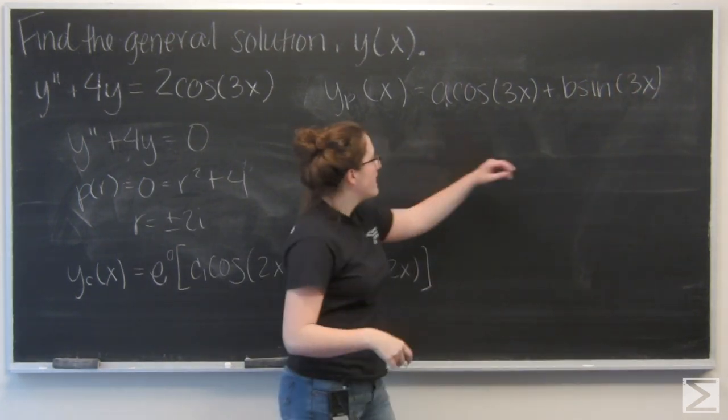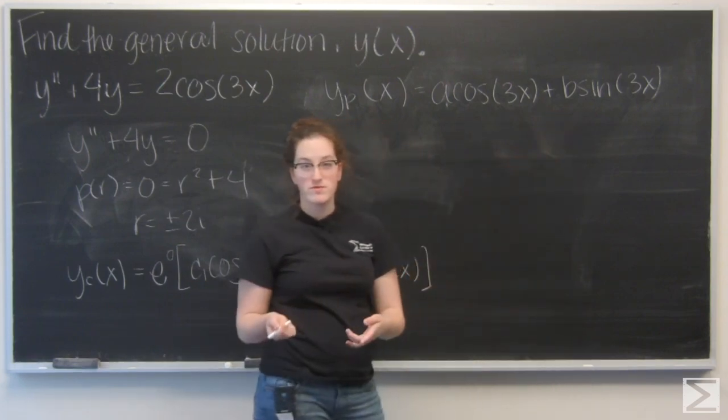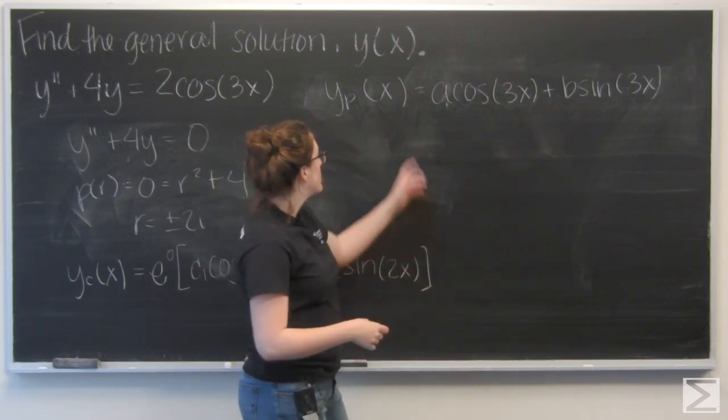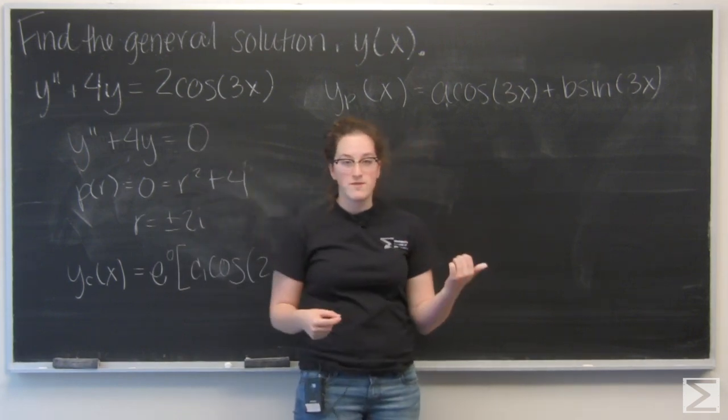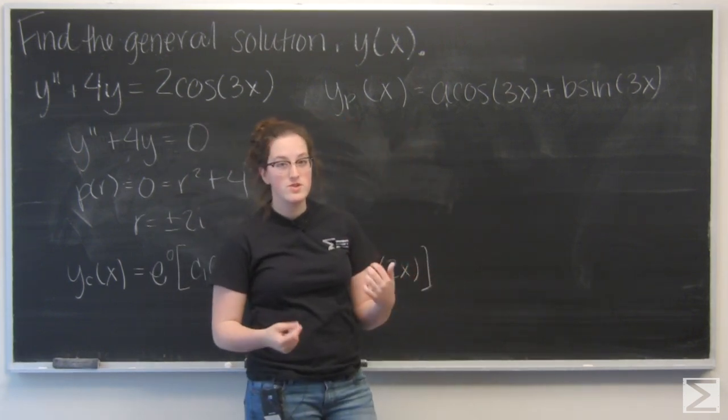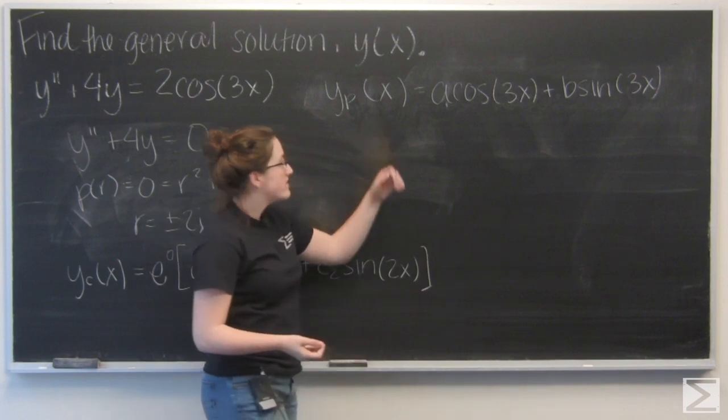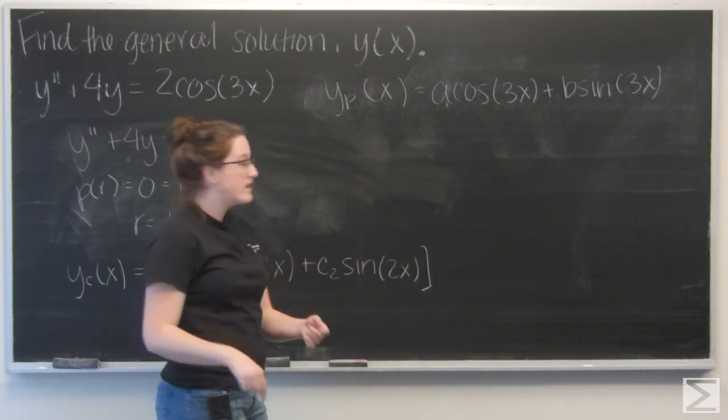So I'm going to use a and b as coefficients, but those just represent any real number. Now I want to plug yp into the given system so that I can solve for specific values of a and b. And to do that I want to find its second derivative so I can plug in. Let's start by finding the first derivative.